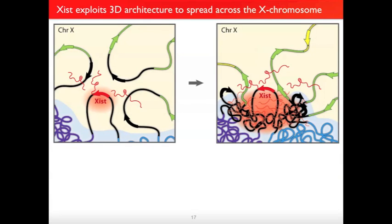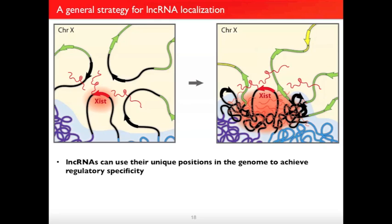We think XIST spreads through an iterative process: first it reaches out in three dimensions and spreads to nearby sites; it then changes chromosome conformation and pulls new regions of the chromosome into closer proximity; and after that, it repeats this process by spreading in three dimensions to newly accessible sites. We'd like to suggest that these principles actually apply to other lncRNAs and represent a generalizable strategy by which lncRNAs identify their regulatory targets.